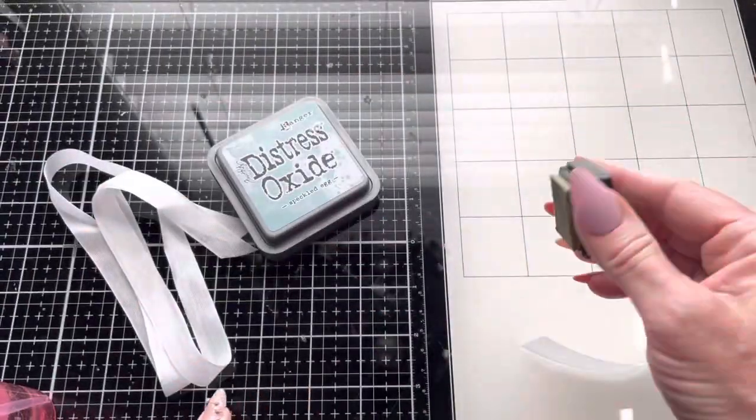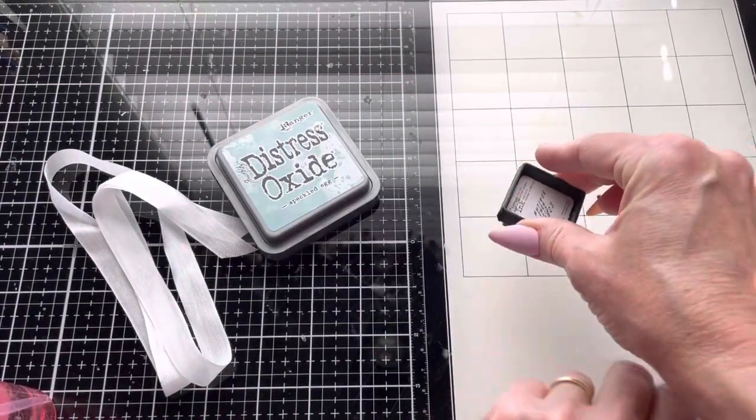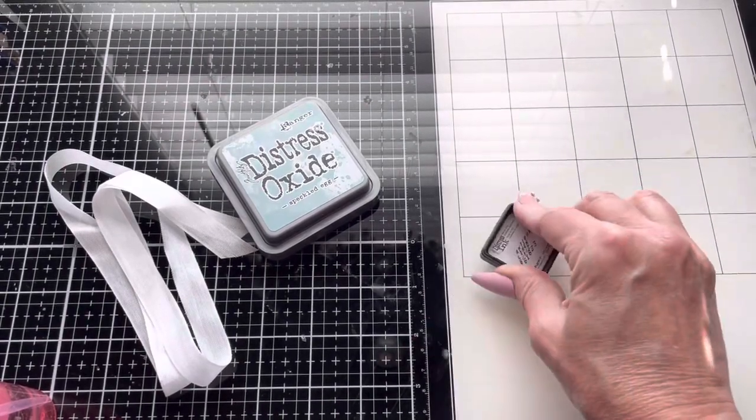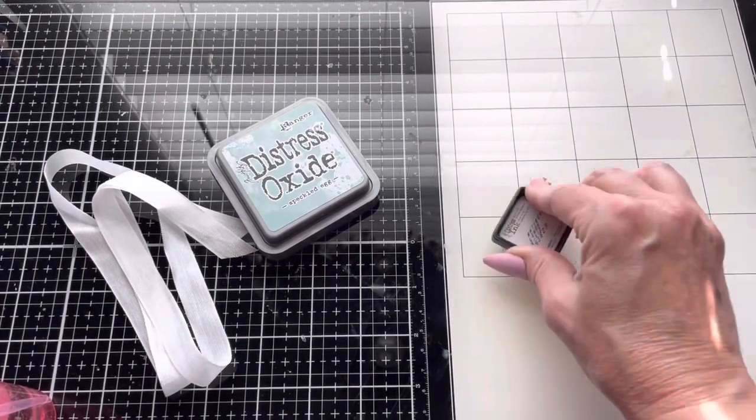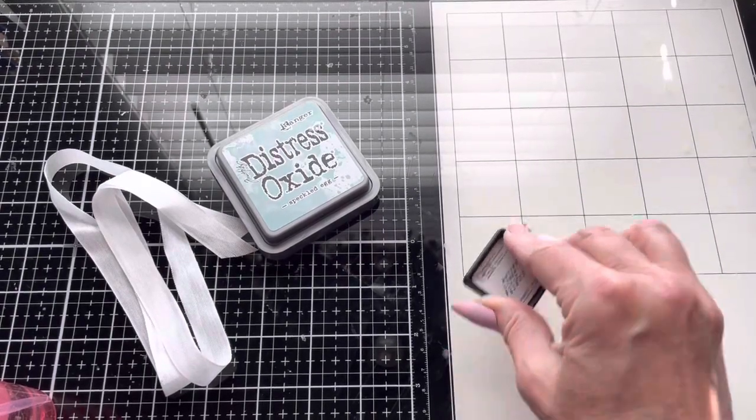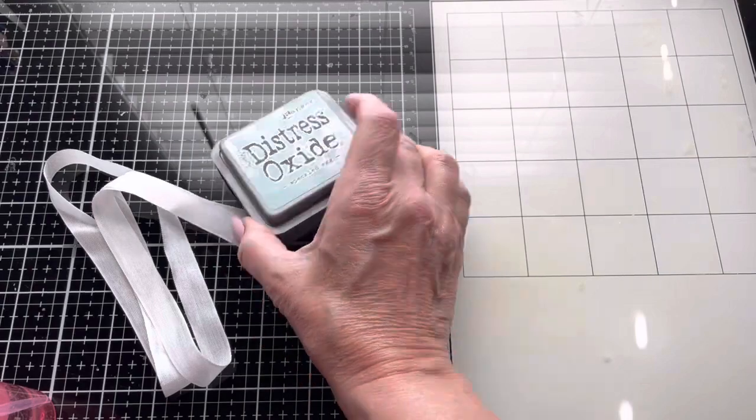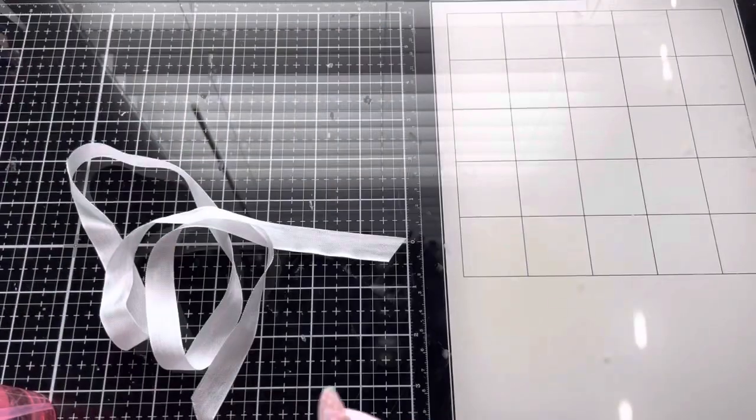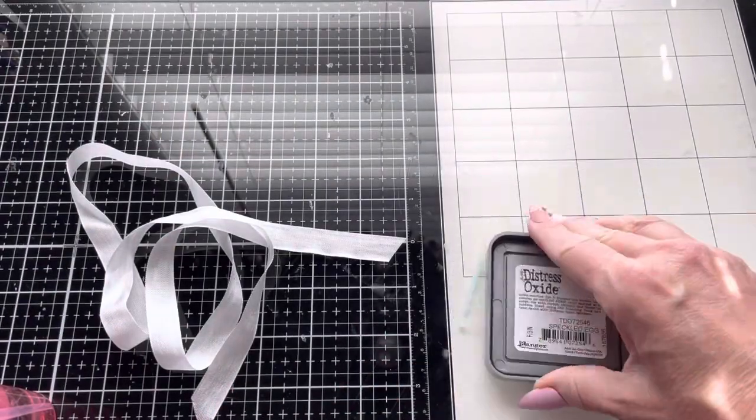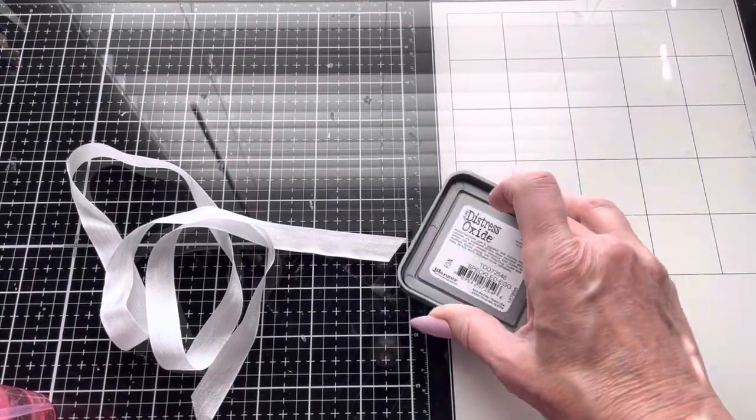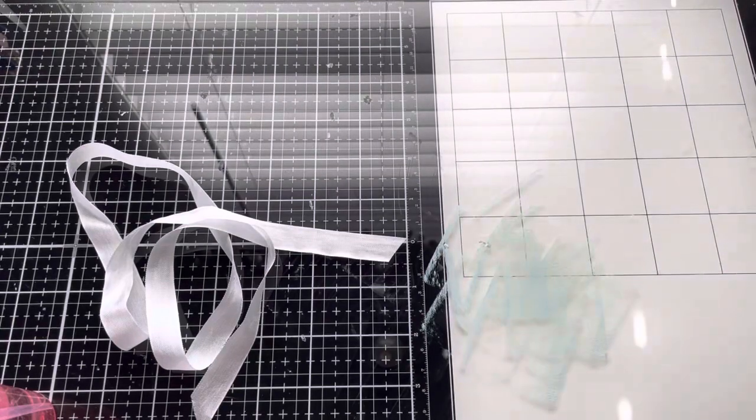It's hard to see but trust me, it's there. You just want to pat it around. Then take the color you're using and do a couple of pats on that. You're going to come back and add more as you need it.